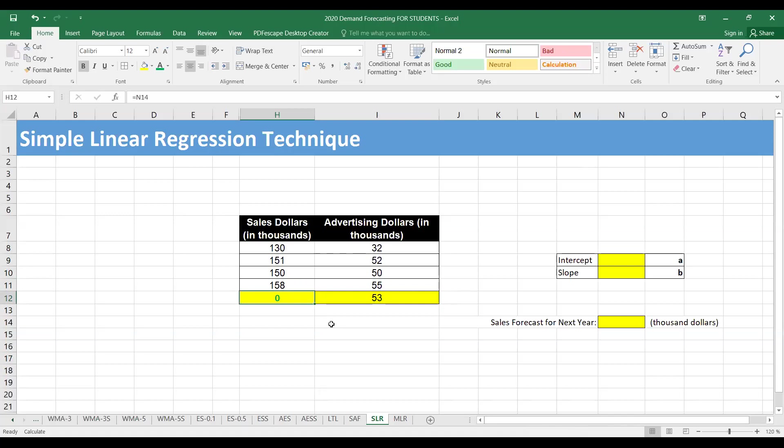We can use two methods as we saw during our discussion on linear trend lines. We could use the intercept function. Known Ys are your sales values and known Xs are the amount spent on advertising. Similarly, we can find the slope, same known Ys and Xs.